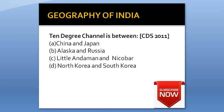The 10 Degree Channel is between: Option A: China and Japan. Option B: Alaska and Russia. Option C: Little Andaman and Nicobar. Option D: North Korea and South Korea.